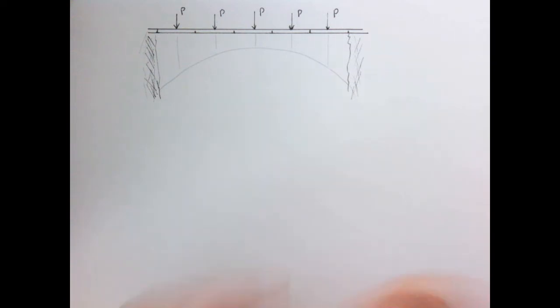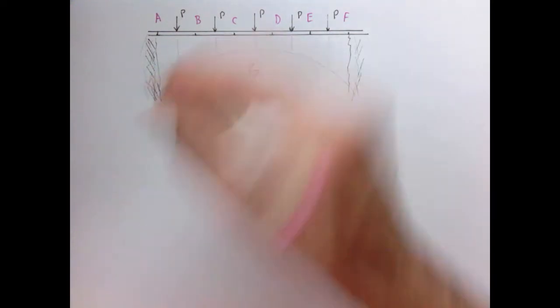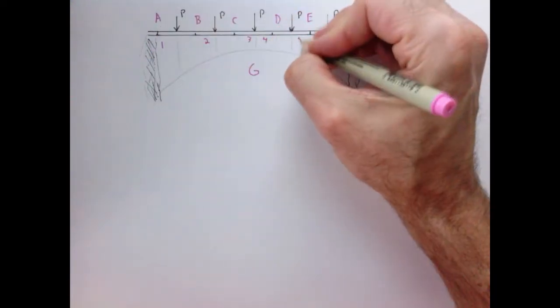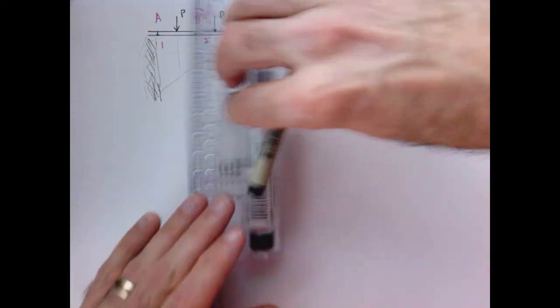Let's label the region between the forces. And let's label the regions inside the truss here. Now let's use our graphical statics to actually build this structure and get the right kind of angles that we want.